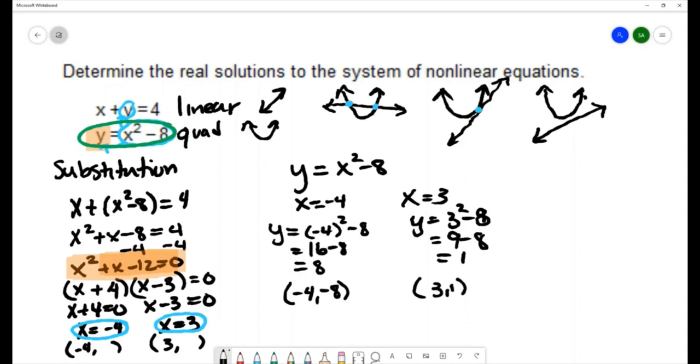So these are the solutions to my system of nonlinear equations. You can also check by substituting these ordered pairs into the original system. Let me clean this up. So let's check the ordered pair negative 4, 8 - I don't know why I wrote negative there, that should be positive 8, sorry about that.